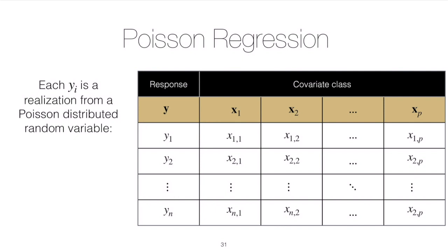Let's specify the three components for the Poisson regression model. Our Poisson regression data might look like a table with a response column — that's the random component — and a set of predictors. For each row we call the set of predictors the covariate class. Covariate is just another name for the predictor variable, and that's the systematic component.